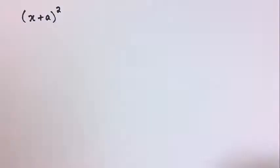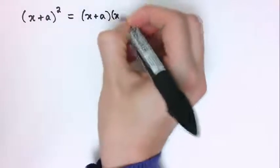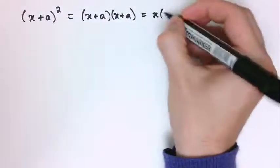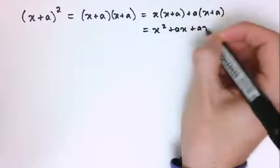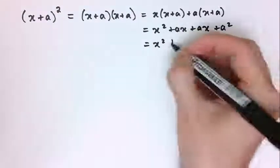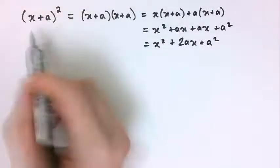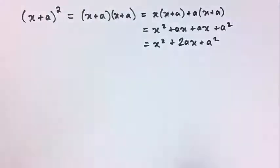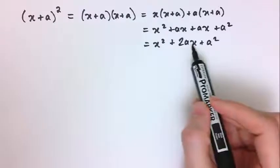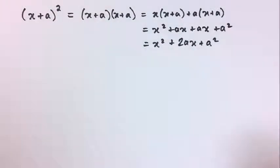There are three really useful results worth learning. The first: (x + a) squared equals (x + a)(x + a), which expands to x squared plus ax plus ax plus a squared, giving x squared plus 2ax plus a squared. For example, (x + 4) squared uses this result with a equals 4: x squared plus 2 times 4 times x plus 16, which is x squared plus 8x plus 16. This also reminds you that the extra 2ax term appears — it's not just x squared plus a squared.